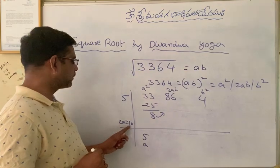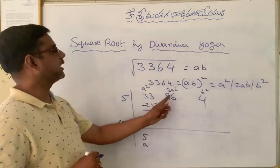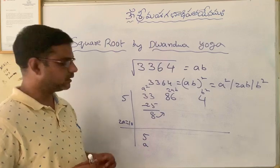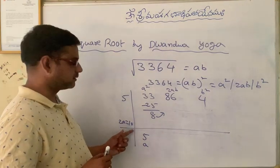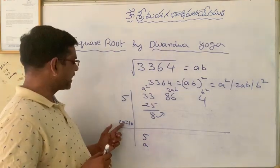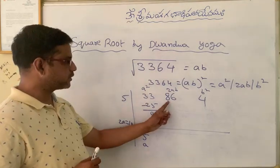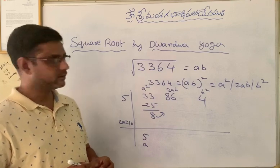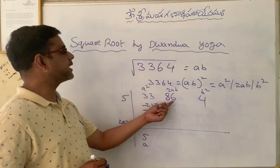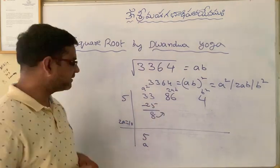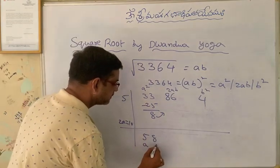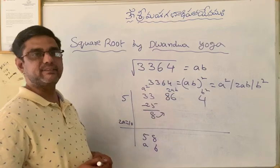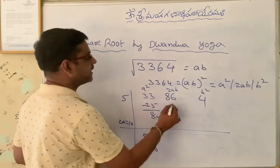We know 2A is 10 and 2AB is 86. It is easy to find out B: if 2A is 10 and 2AB is 86, then B will be 8. That means 10 goes 8 times in 86 — 10 eights are 80.